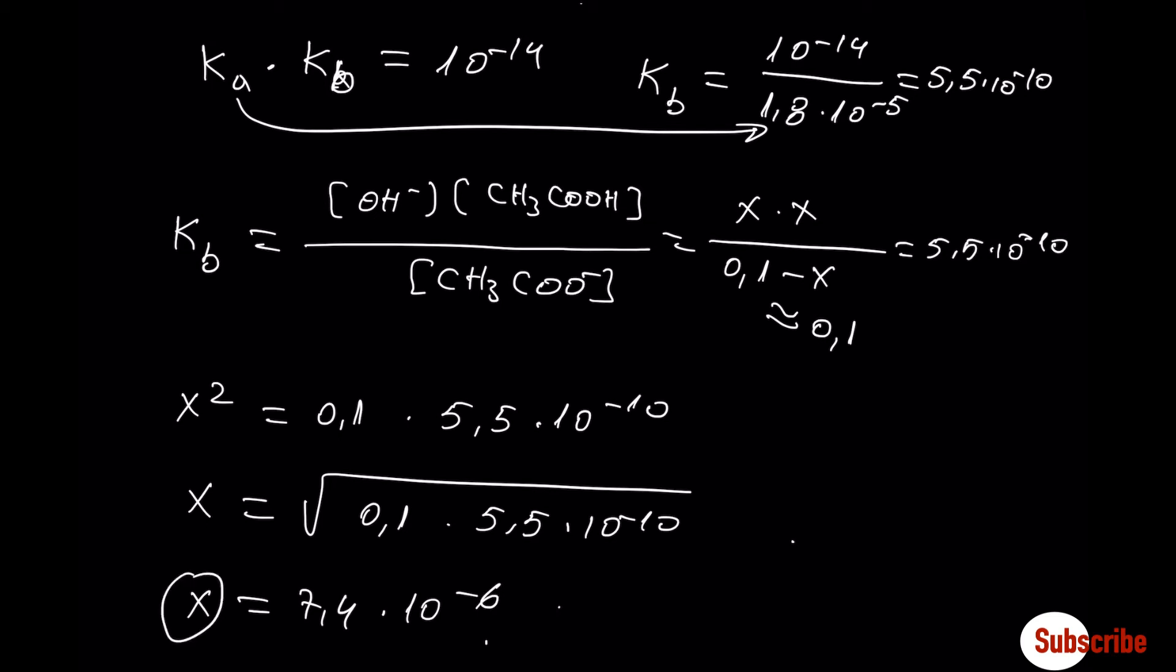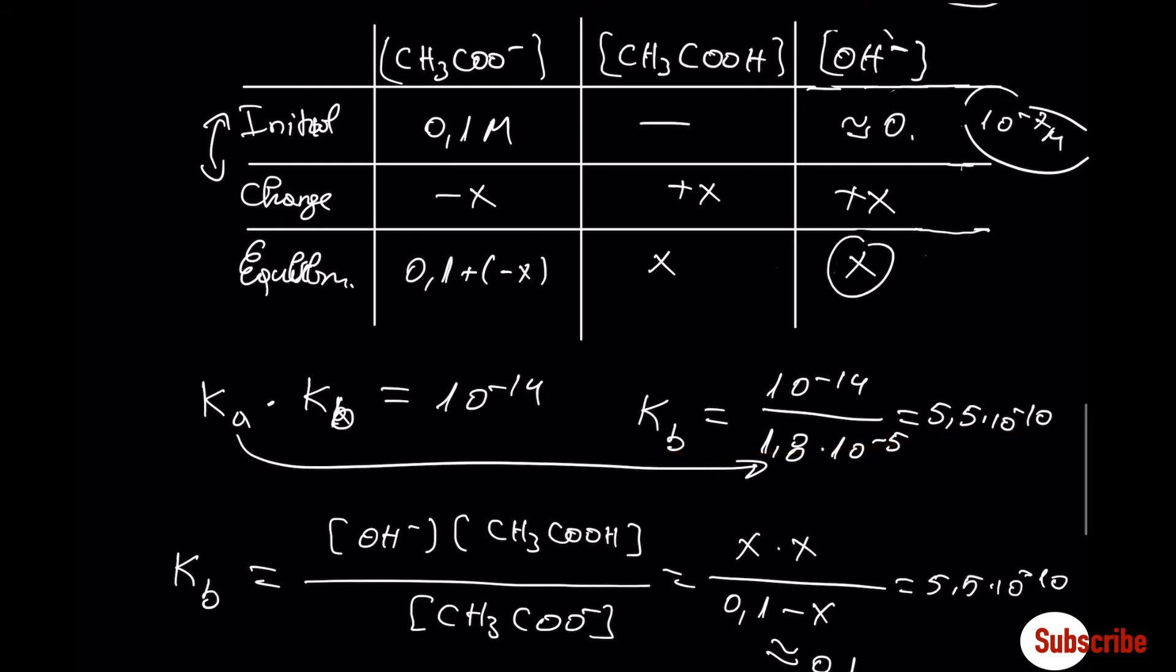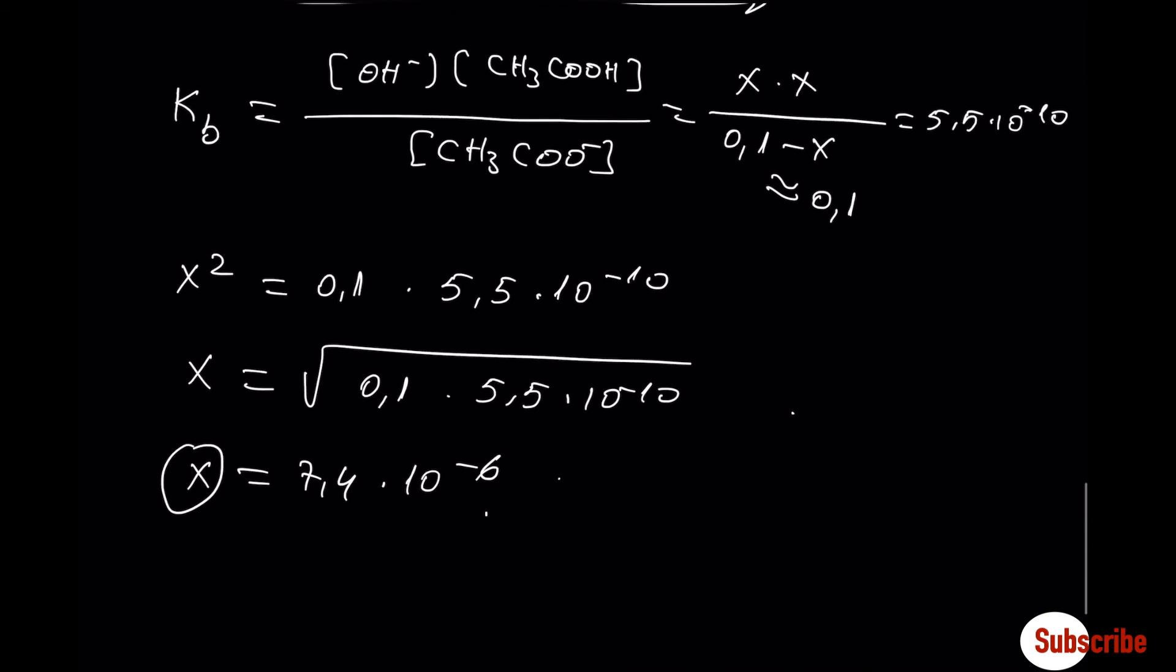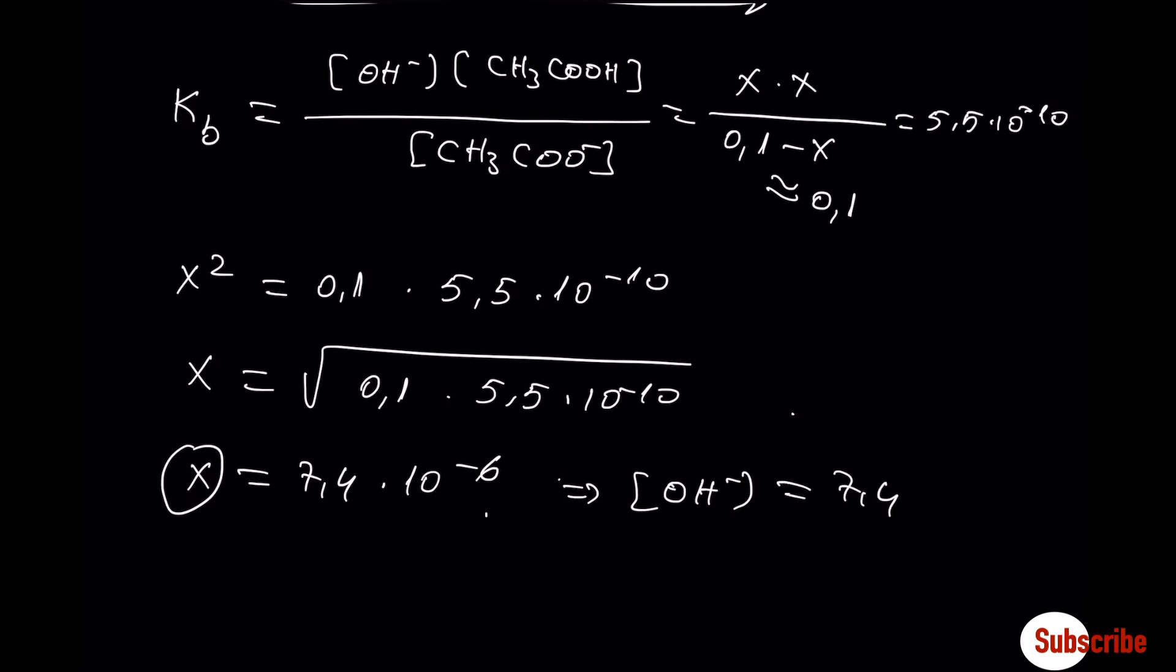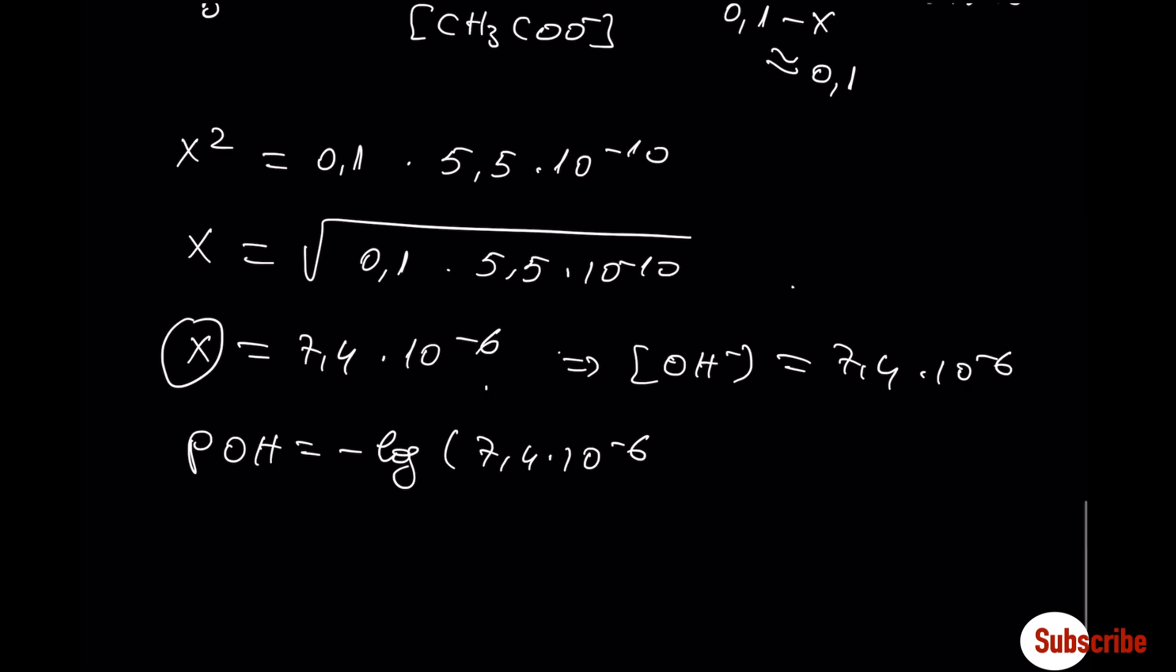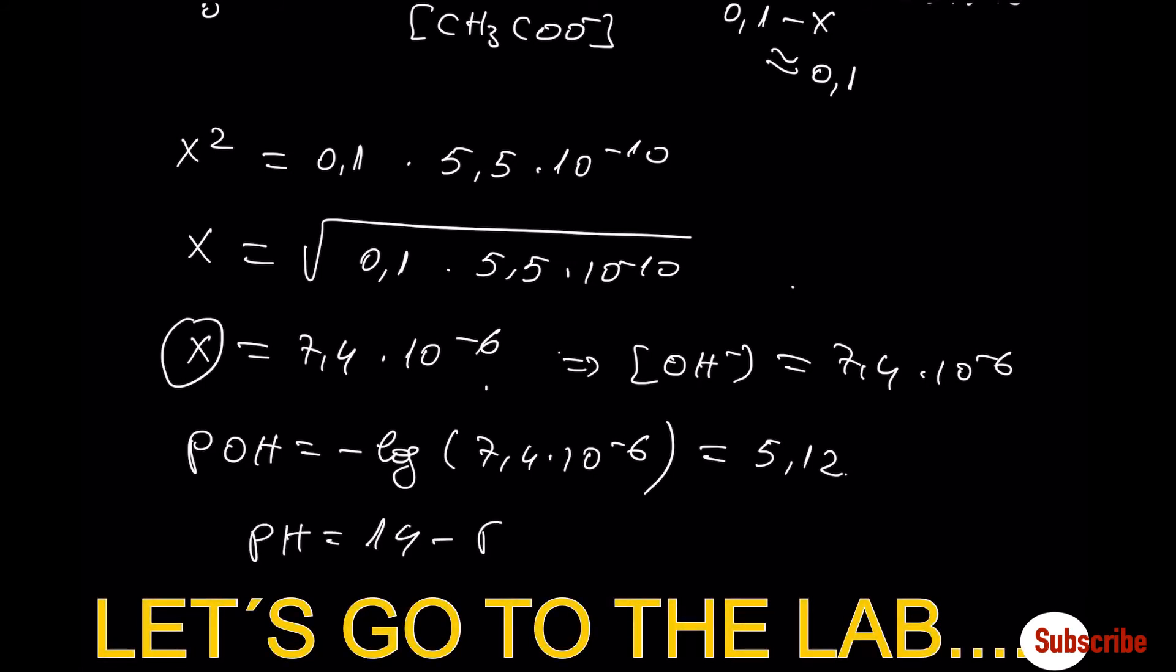So from here we can find the X that is equal to 7.4 times 10 to minus 6. Who is X? X is the concentration of OH- in the equilibrium. From here we can find the pOH, which is equal to 5.12, and pH is equal to 14 minus pOH.